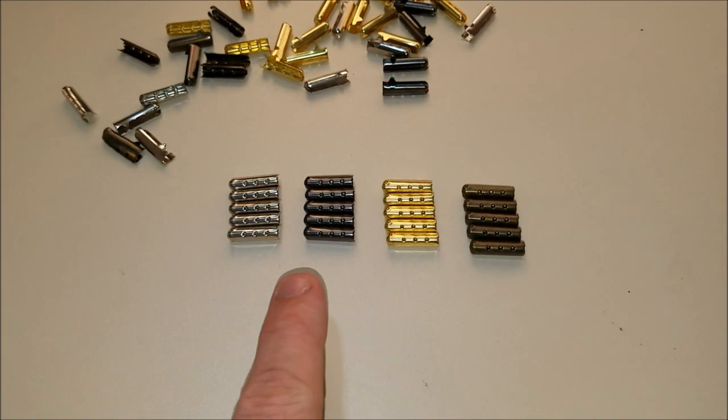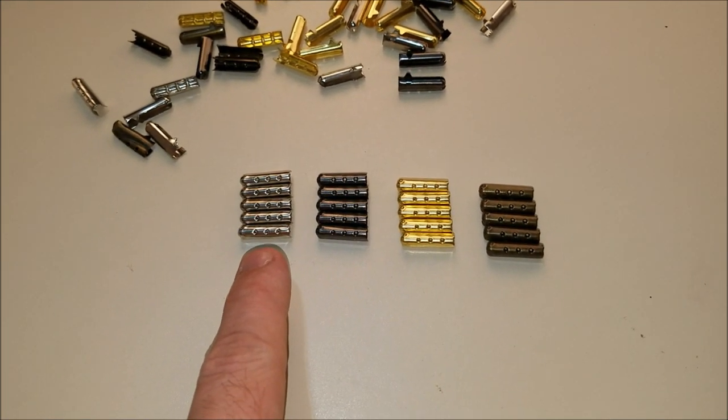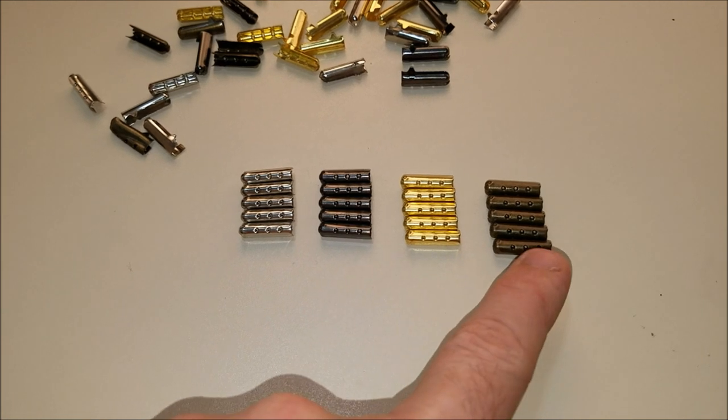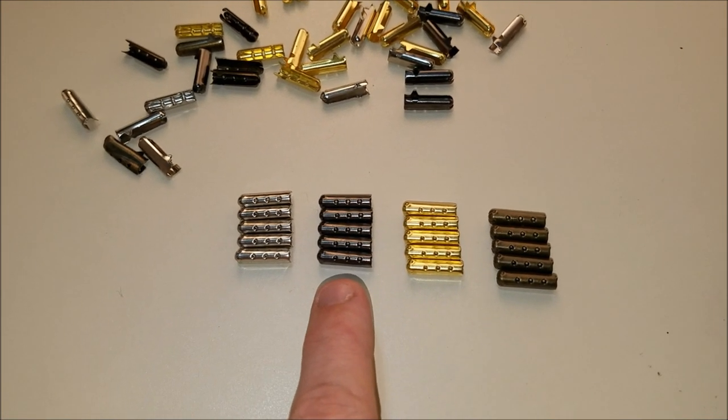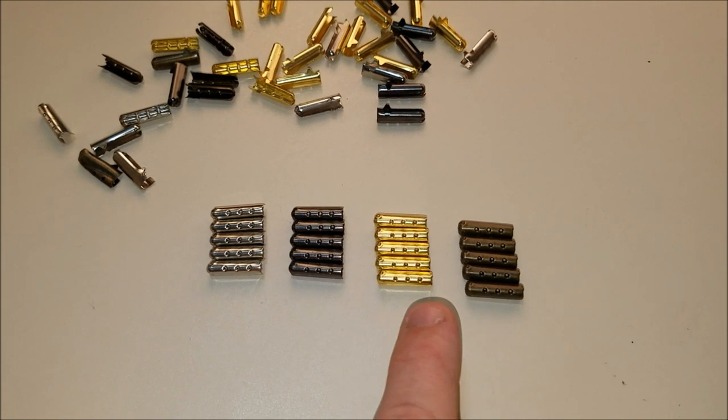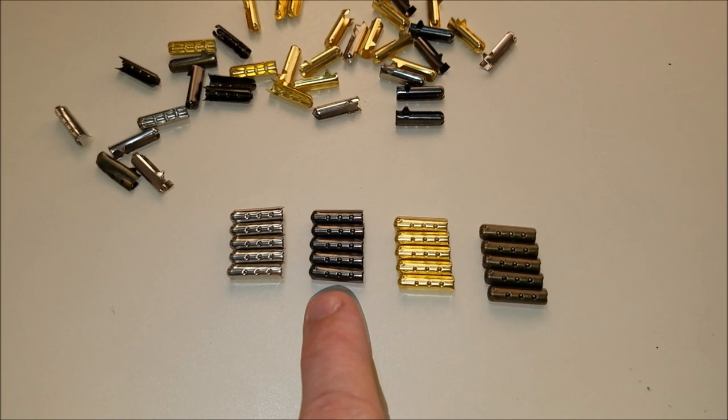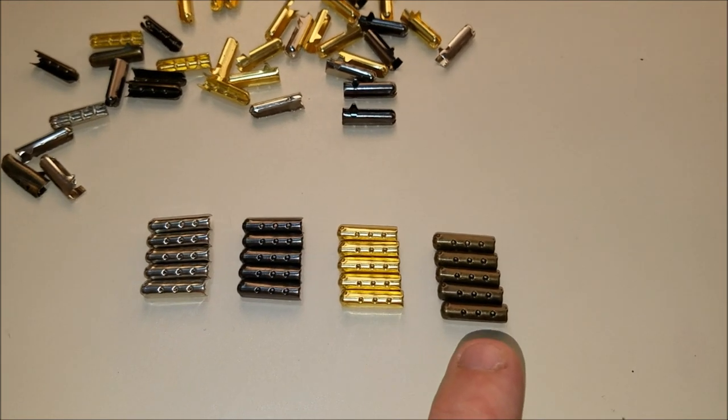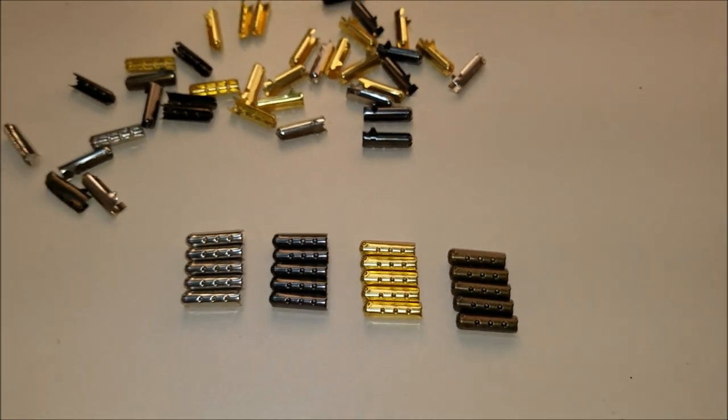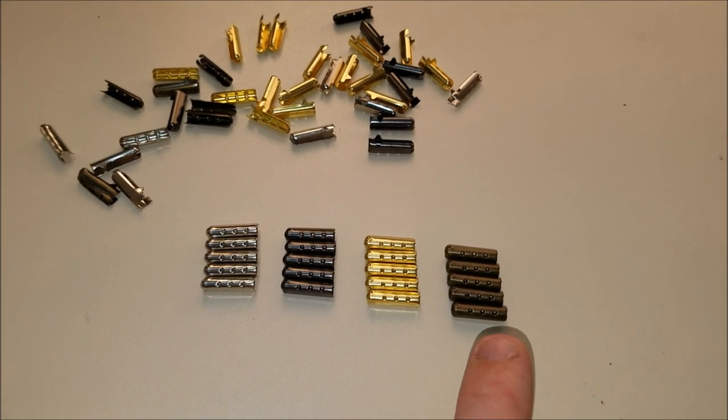This set right here is five of each color. We have chrome, sort of like an anodized black, kind of like a charcoal smoky black gray. Then we have gold and we have kind of a copperish brass. So silver, black, gold, and brass.